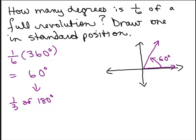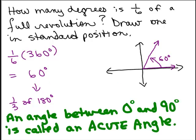Now this angle I drew here, 60 degrees, notice it's the way when you first learn about angles how you think of an angle. You don't think of these full revolution type ones. It's an angle between 0 and 90 degrees. And an angle between 0 and 90 degrees is called an acute angle.